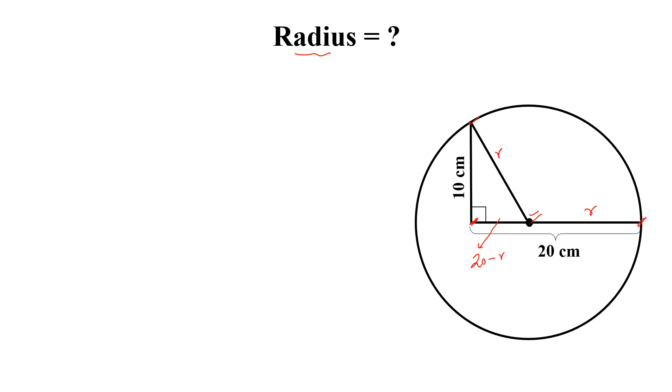Now by Pythagoras theorem, we can write 10 square plus 20 minus r whole square equal to r square. Simplify this, so 100 plus 400 minus 40r plus r square equal to r square.